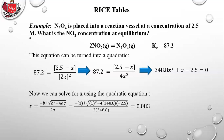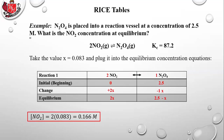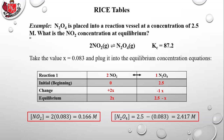Using the quadratic formula and plugging in the numbers gives X equals 0.083. The alternate value for X is negative — you can't have a negative concentration, so you eliminate it. Going back up to NO2 in the equilibrium row: NO2 equals 2X equals 2 times 0.083, which is 0.166 molar. For N2O4: 2.5 minus 0.083 equals 2.417 molar. Those are the equilibrium values.